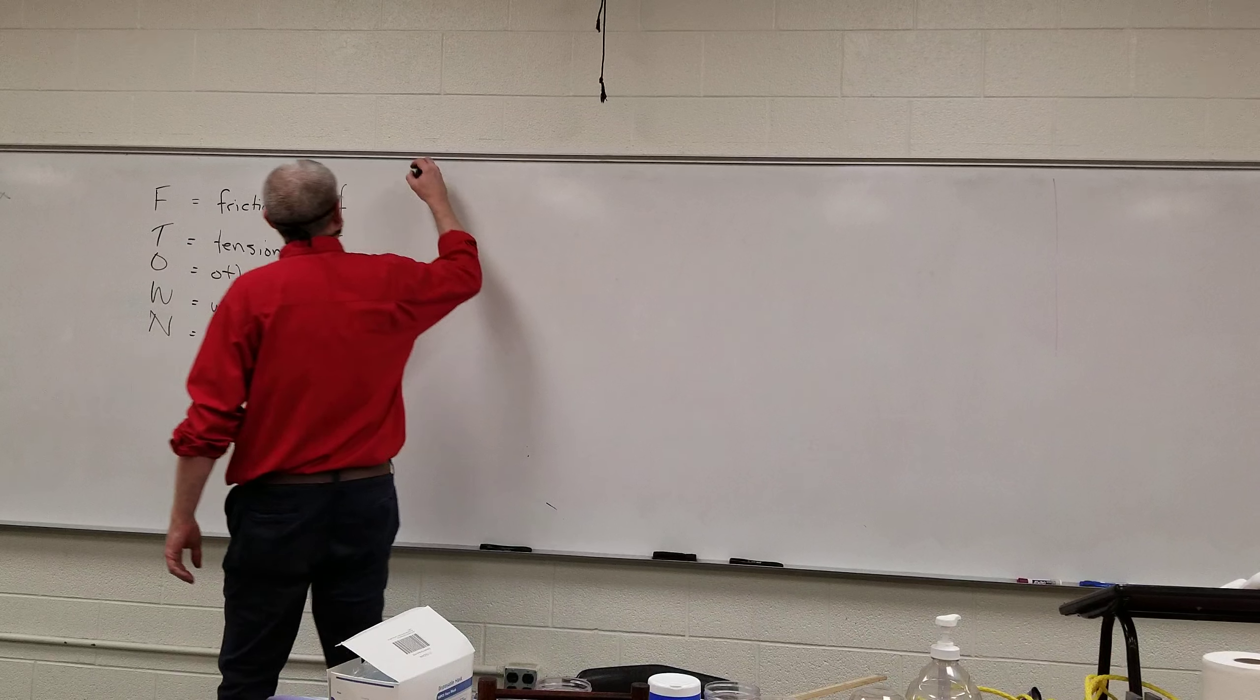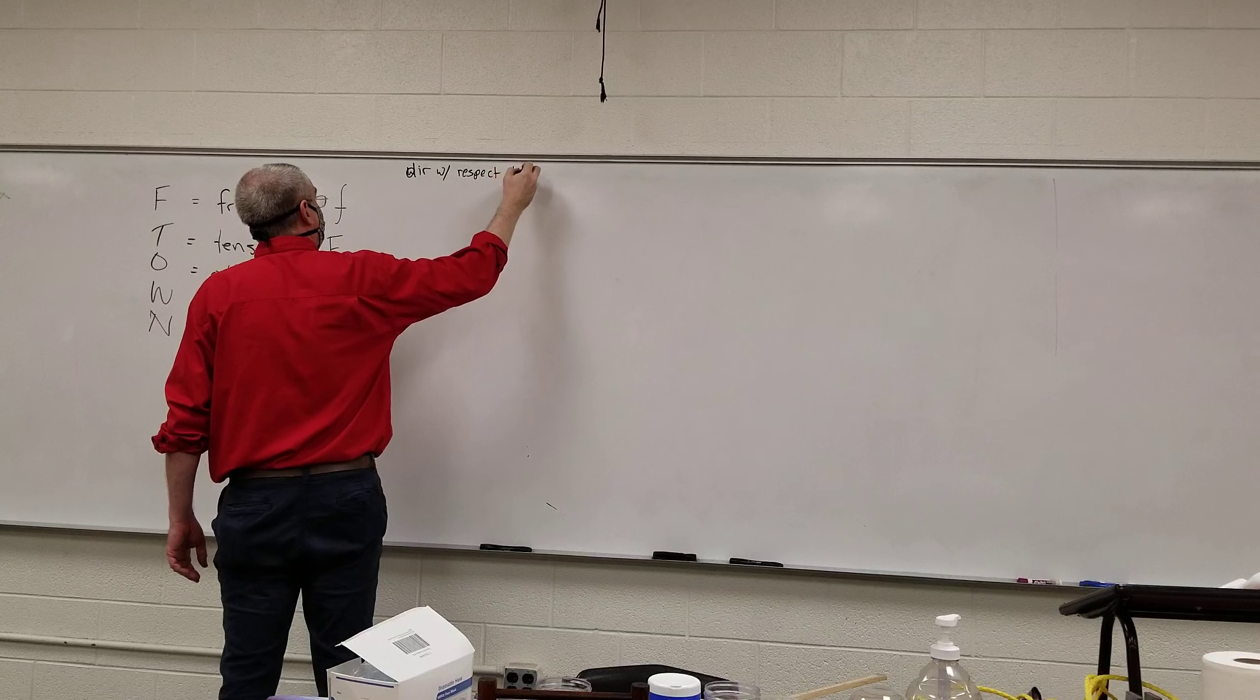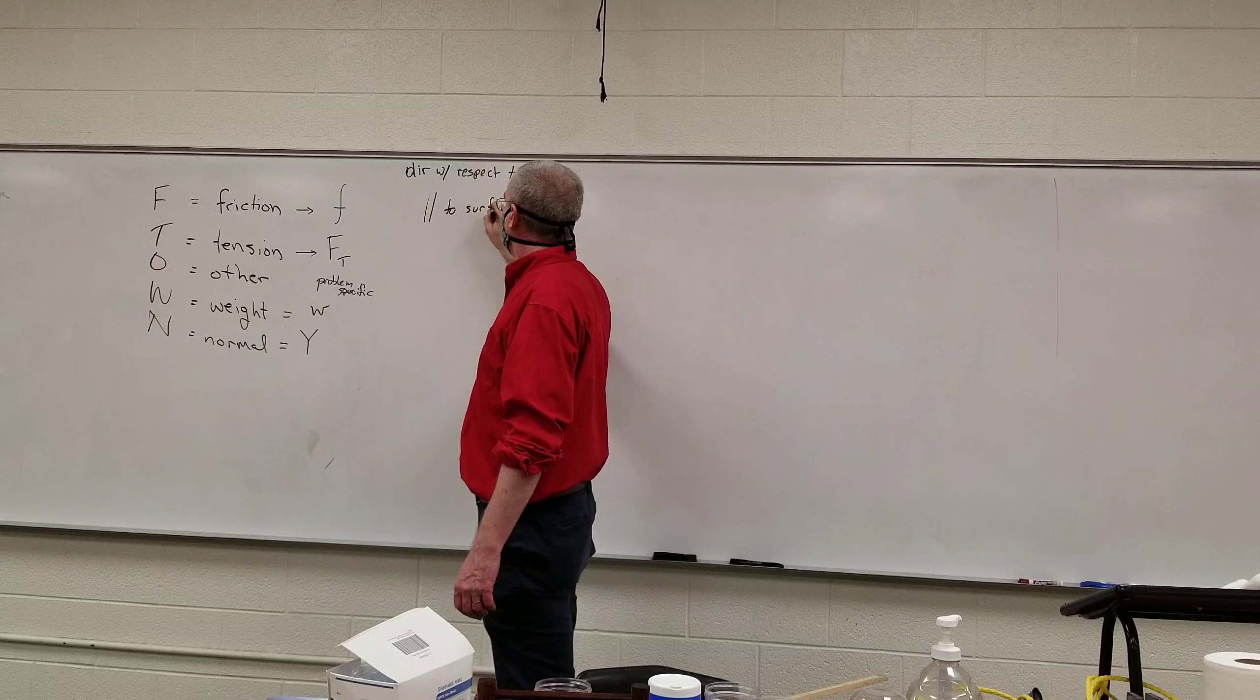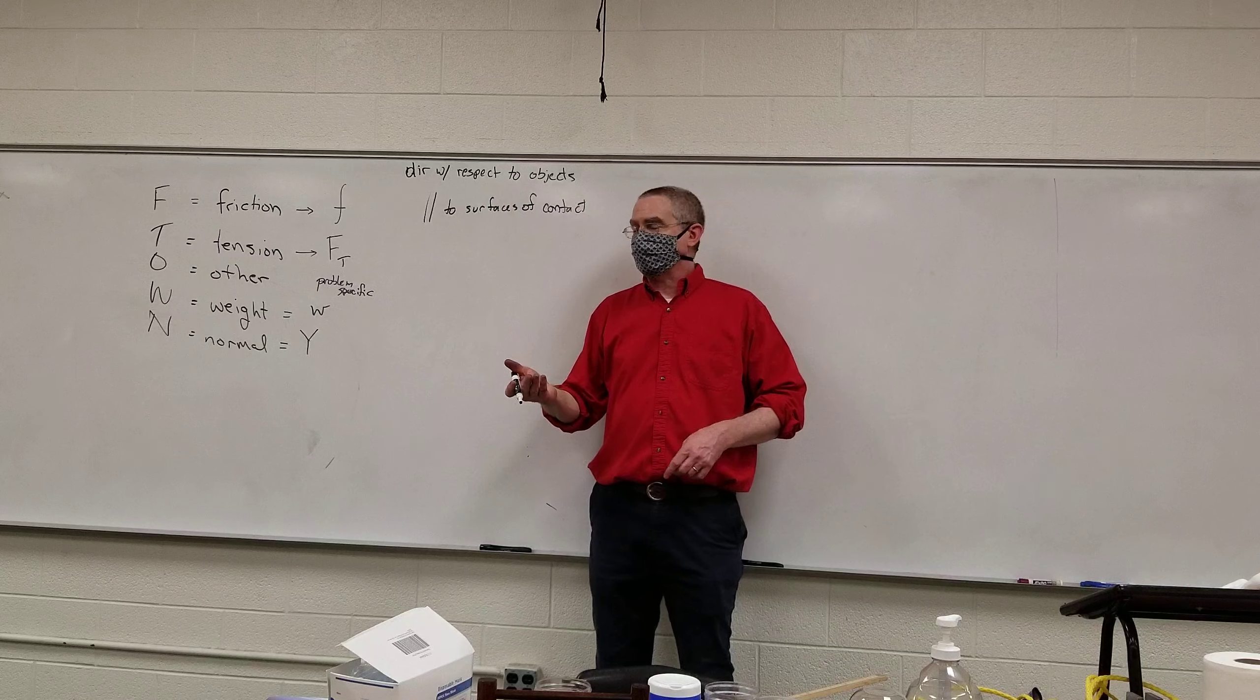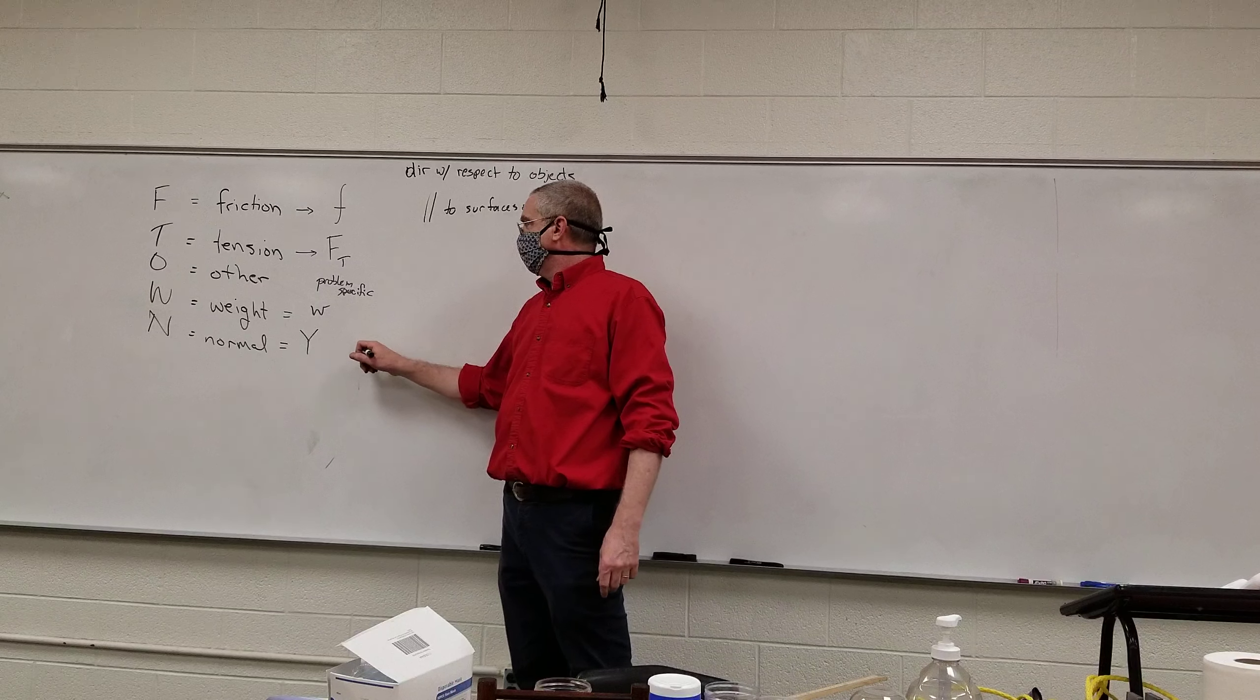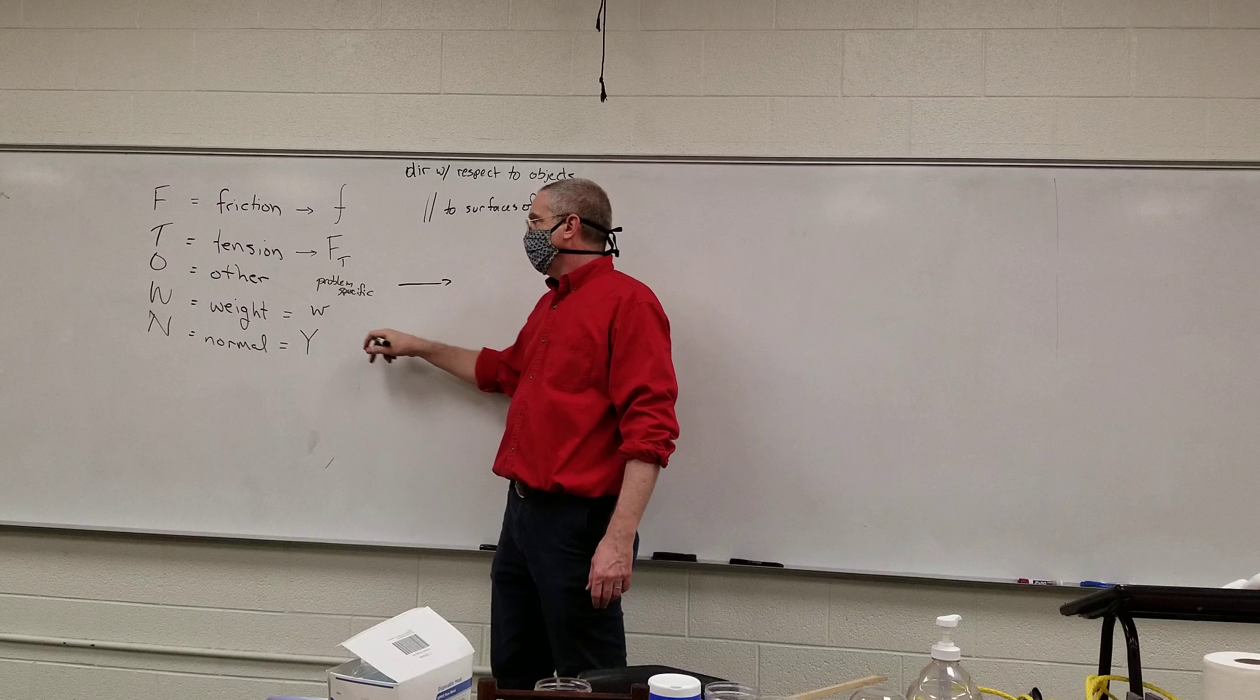Now, each of these forces acts in a particular direction. So, direction with respect to objects. Friction is always parallel to the surfaces of contact. Parallel to surfaces of contact. So, if I take this book and I slide it on the table, friction was acting on it. The friction acting on the book and the friction acting on the table are both parallel to the surfaces. They would be horizontal. I'm going to come back to tension. Other is problem-specific. I also needed a valve.